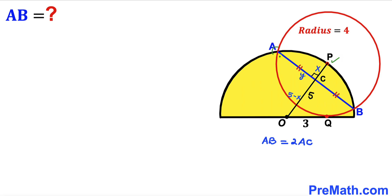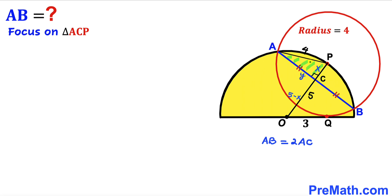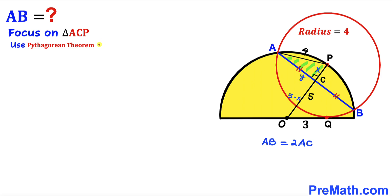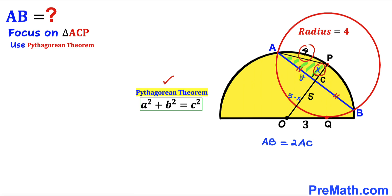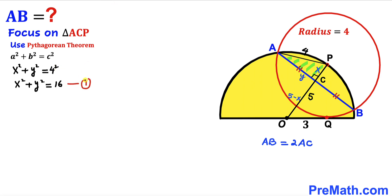Now I'm going to connect center P with point A, giving us right triangle ACP. AP is the radius of the red circle, so AP equals 4 units. Applying the Pythagorean theorem to right triangle ACP, with hypotenuse 4 and legs x and y, we get: x² + y² = 16. Let's label this equation 1.